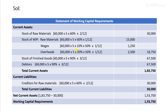Finished goods are held for 3 months. The calculation is: 60,000 into 5 into 90% into 3 by 12, giving 67,500. Debtors are also calculated at cost: 60,000 into 5 into 90% into 3 by 12, giving 67,500. The total current assets amount to 80,000.